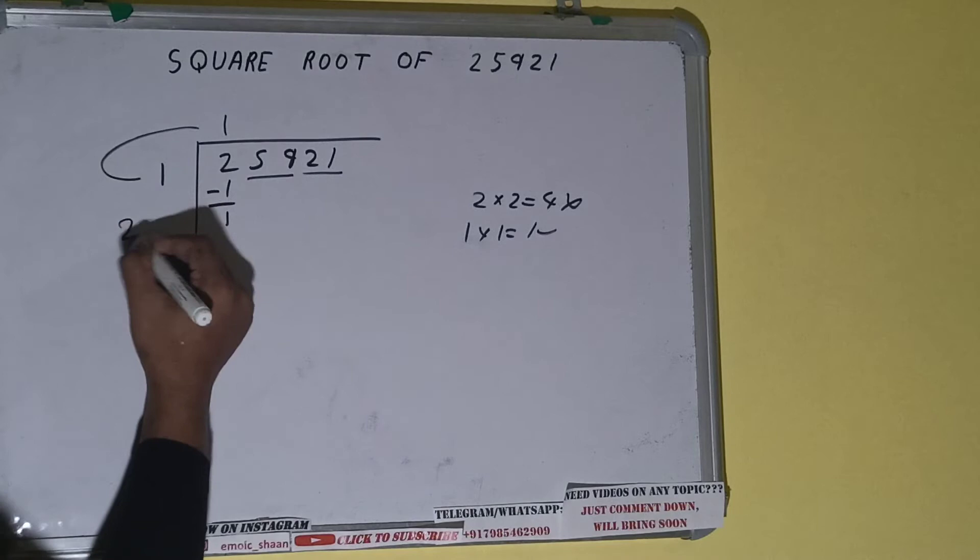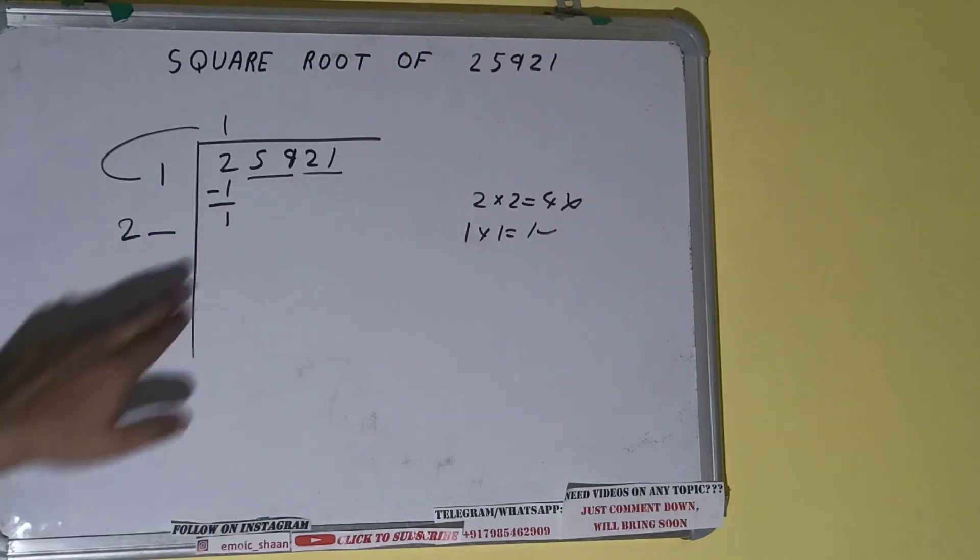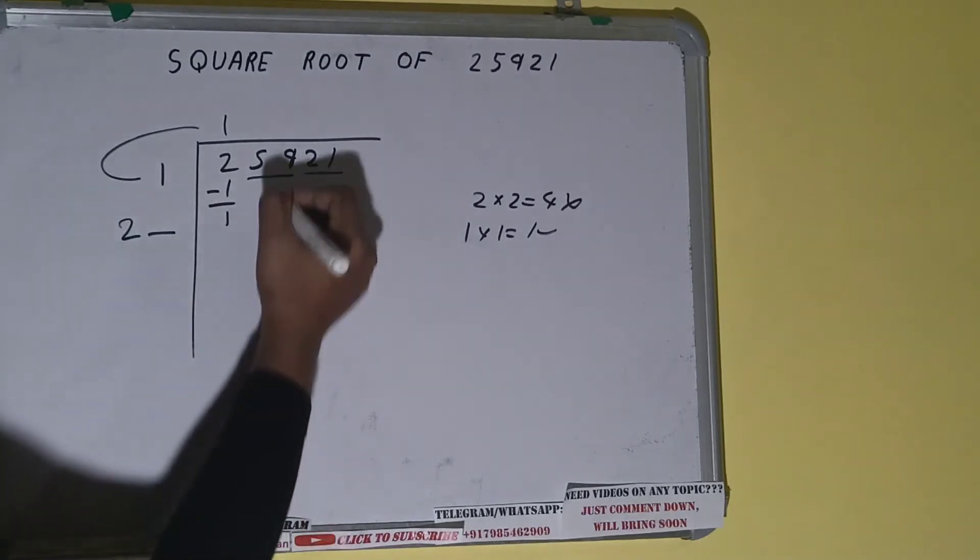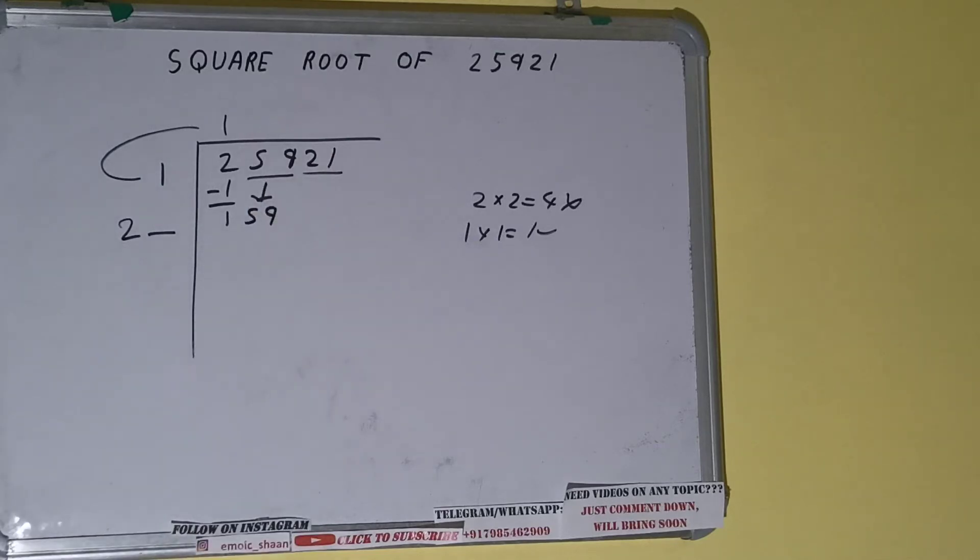Write it here and keep a digit extra, and this number we need to make it big. So bring the next pair down and it will become 159. Now whatever number we write here, we have to write here also.